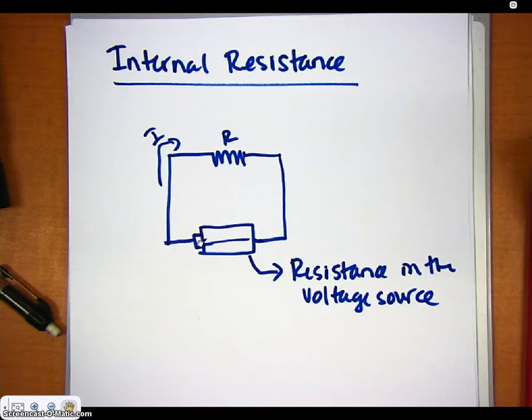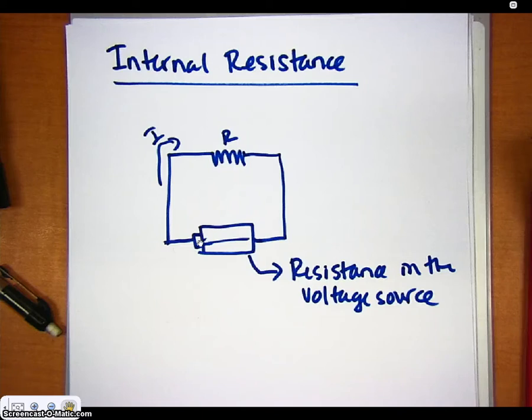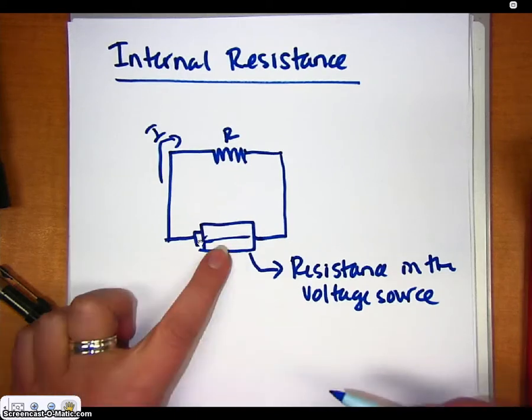you're in your car and you have the headlights on. If you start the car with the headlights on, the headlights actually dim for a second because they're losing some voltage due to more current now running through the battery.